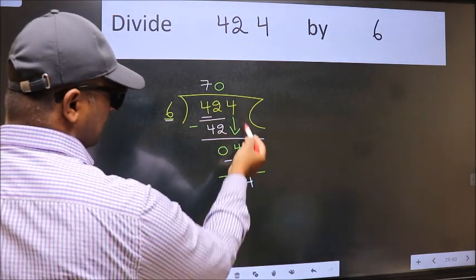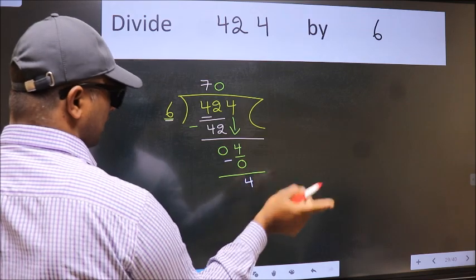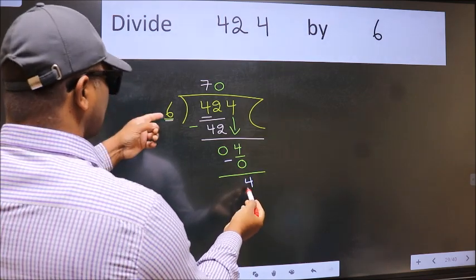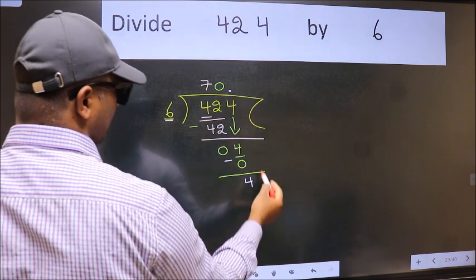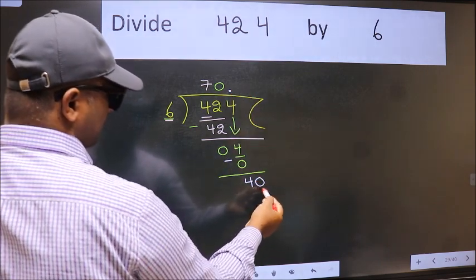Over here, we did not bring any number down, and 4 is smaller than 6. So now we can put dot and take 0.